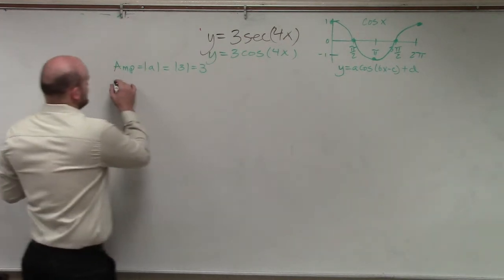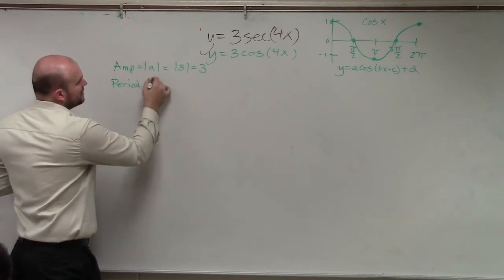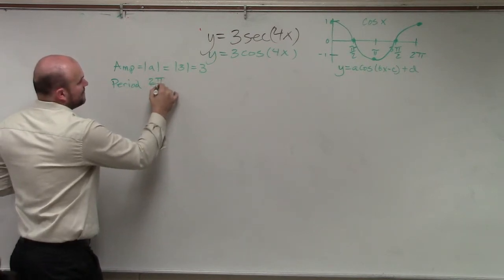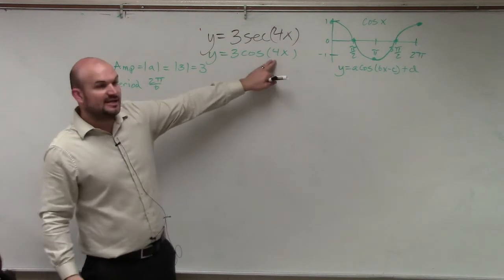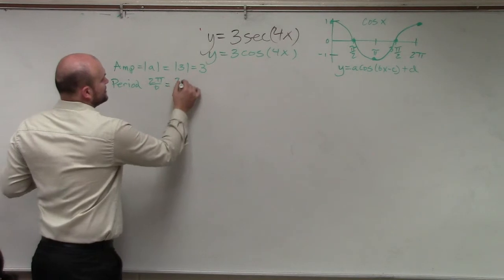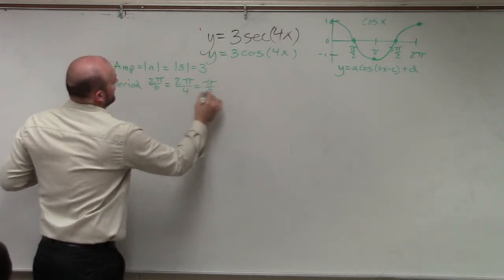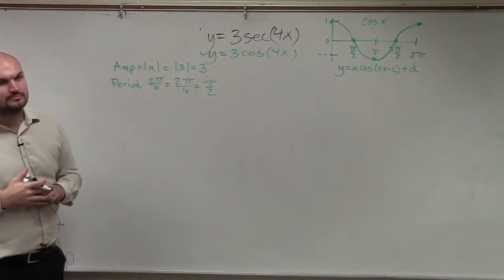The next thing we want to figure out is the period. How do you find the period? Well, in your notes, that's 2π divided by b. b is your coefficient of your x inside of that term. So all I do is 2π divided by 4, which is π halves.